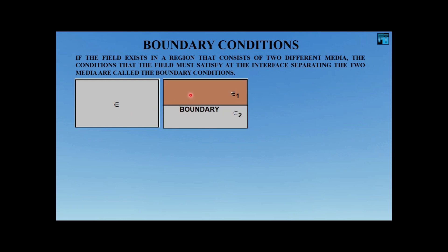We have two different dielectric media: the upper one with permittivity epsilon-1 and the lower one with permittivity epsilon-2. The black line is the boundary. Boundary conditions are those conditions which are satisfied by the field at this boundary line, and not anywhere else.